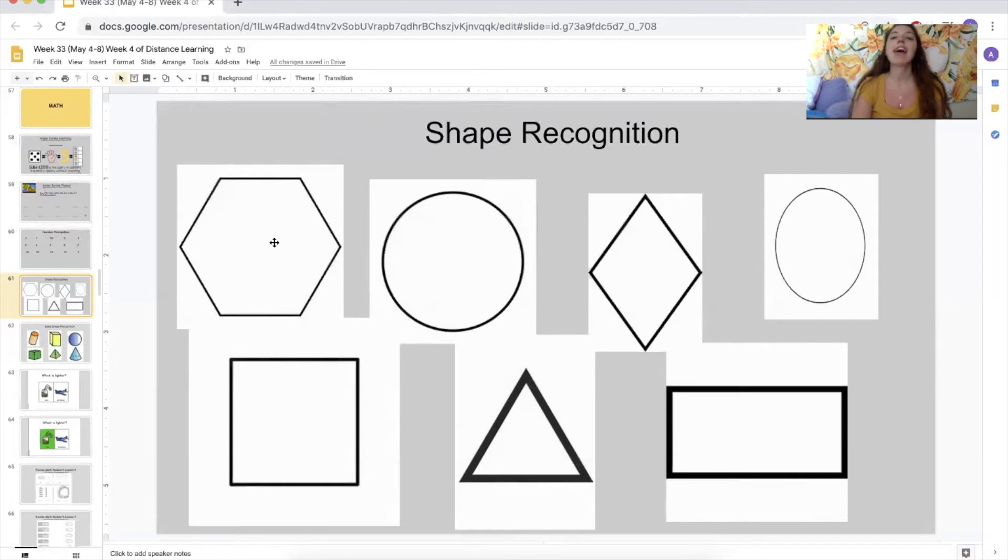This one? Hexagon has how many sides? One, two, three, four, five, six. Very good. How about this one over here? Square. How many sides does a square have? Four. Excellent.